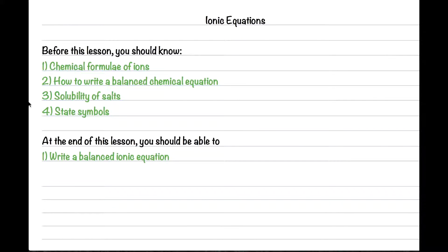Today let us look at how to write ionic equations. Before this lesson you should know the following things: the chemical formula of ions, how to write a balanced chemical equation, the solubility of different salts, and finally the state symbols and what they mean. If you are unsure of any of these topics please go back and revisit them before watching the video. At the end of this lesson you should be able to write a balanced ionic equation.